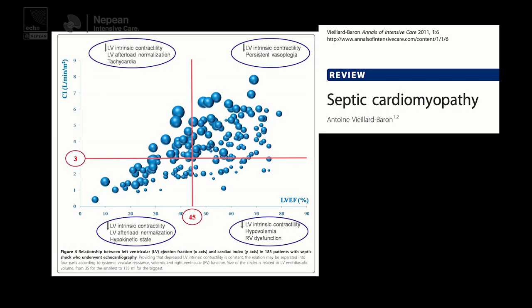This goes into other bits we see — if someone's got a supranormal ejection fraction and they're septic with one of those mid-cavity gradients, that's independently associated with a poor outcome, and that only happens if you've got a very hyperdynamic heart. Should we talk about a couple of things that can make your ejection fraction look really good when it isn't quite so good for you?